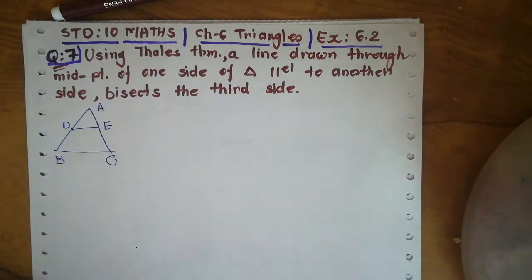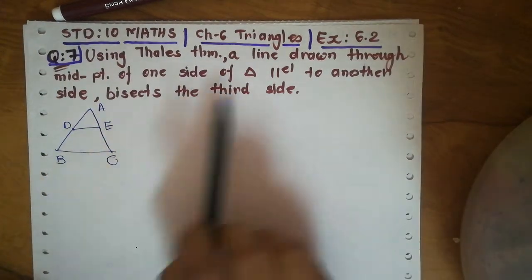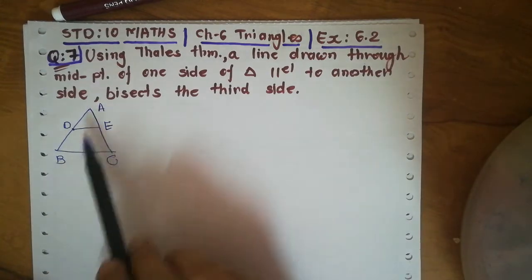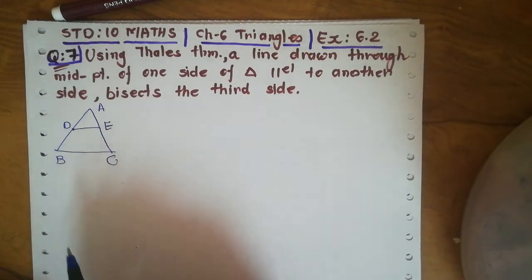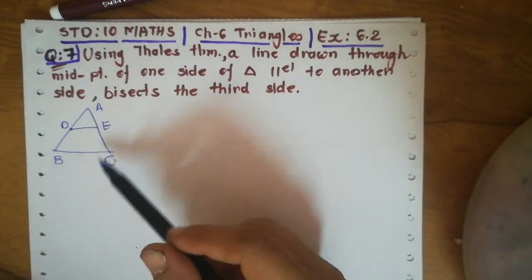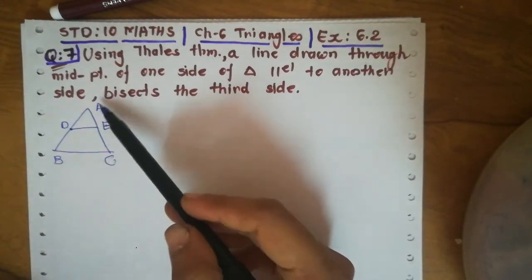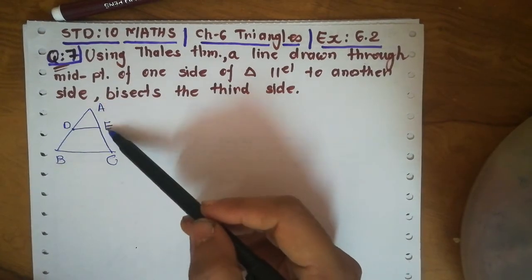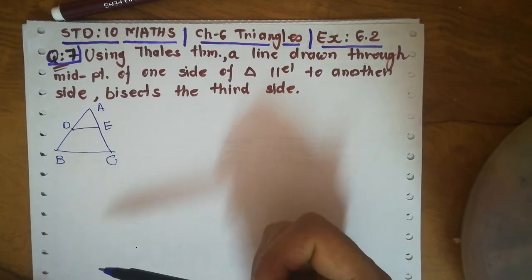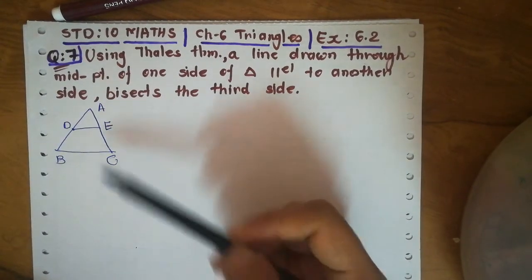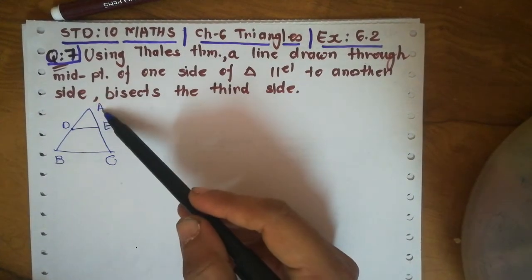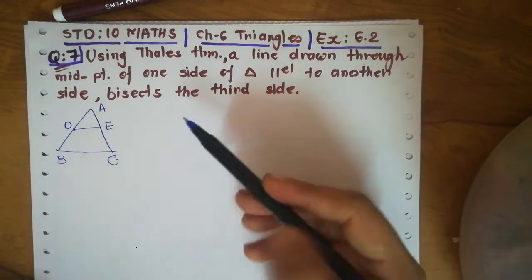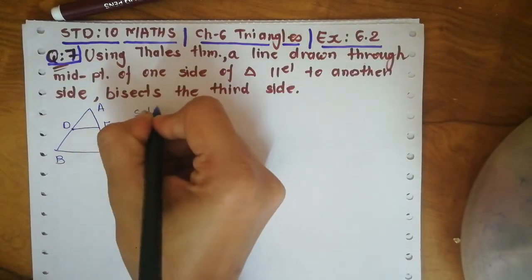The midpoint on AC is E. So if DE is parallel to BC, then it bisects the third side AC, in the form AE equals EC. We know that bisect means exactly half, so AE equals EC.